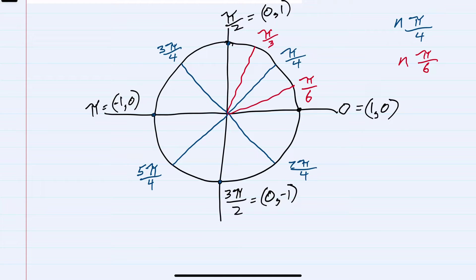Two π/6 simplifies to π/3. Three π/6 is π/2. Four π/6 simplifies to 2π/3. Next we would have 5π/6.